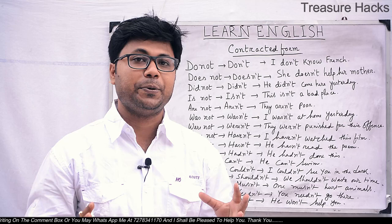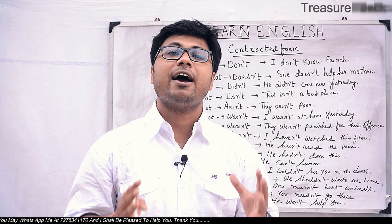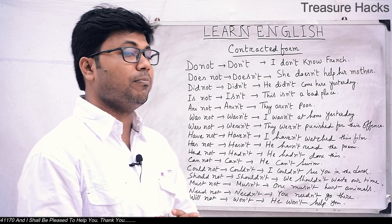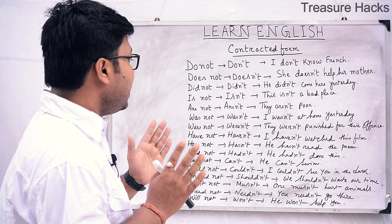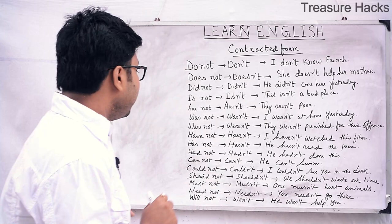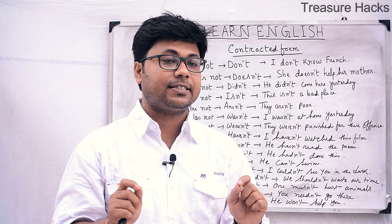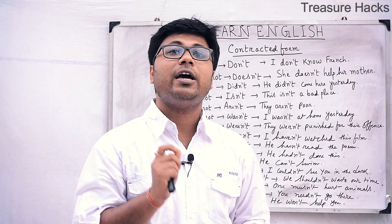Next, 'have not' in contracted form is 'haven't'. For example: I haven't watched this film. Next, 'has not' is 'hasn't' — He hasn't read the poem. Next, 'had not' in contracted form is 'hadn't' — He hadn't done this.